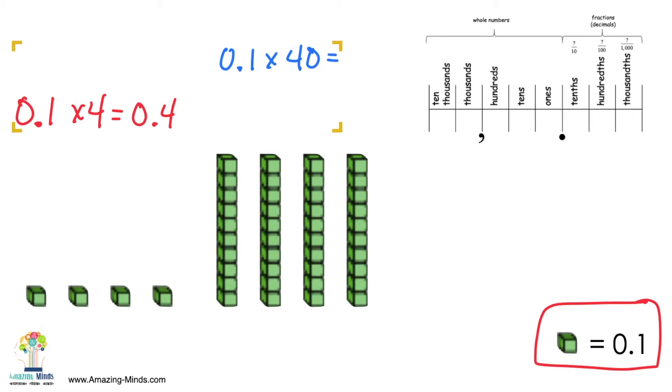But what happens now that I have this new problem and I have 1 tenth times 40. Well, if I use the strategy of, I'm just going to multiply and use what I have here and then just add a zero to it, then what I would get is this, which happens to be a pretty common misconception among fifth graders.